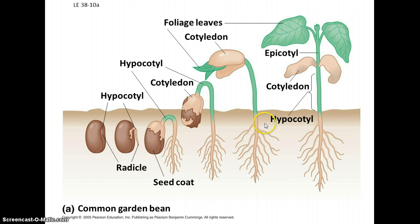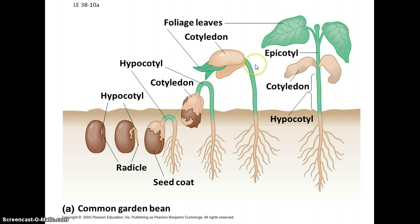Seeds get to the right place and under the right conditions will germinate. You have what's called the hypocotyl, which is the part that becomes the root — it basically heads down. And then the epicotyl, which is the part that goes above ground. And then you have the cotyledons — sort of the first seed leaves, often green but not always. What's above them is the epicotyl, and what's below them is the hypocotyl.